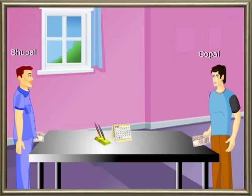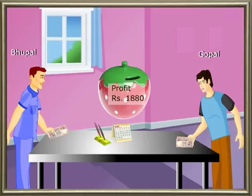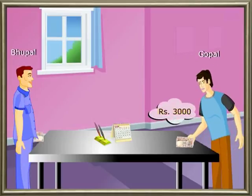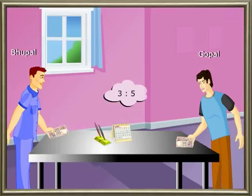Example: Gopal and Bhopal carried on business with capitals of rupees 3000 and rupees 5000 respectively, and they made a profit of rupees 1880 at the end of the year. Find the share of each. Solution: The investment of Gopal is rupees 3000 and the investment of Bhopal is rupees 5000, so the ratio of their investments is 3 is to 5.